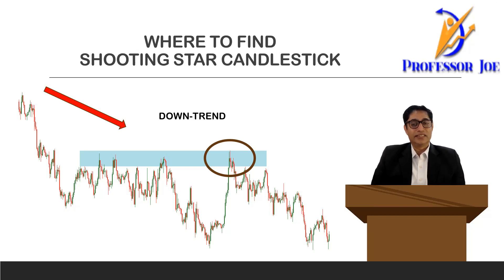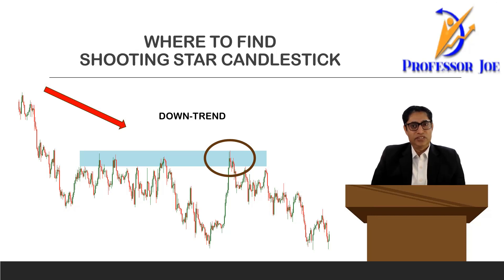At a resistance zone in a good downtrend, you can support your entry with stochastics if it is in an overbought position, and RSI if it's also in an overbought position. These are some of the things that can be helpful to make sure that your trade is in the right direction.